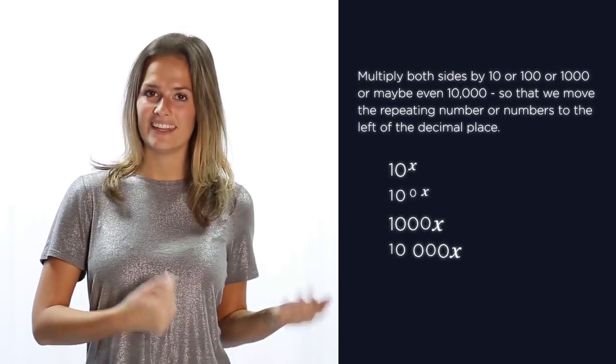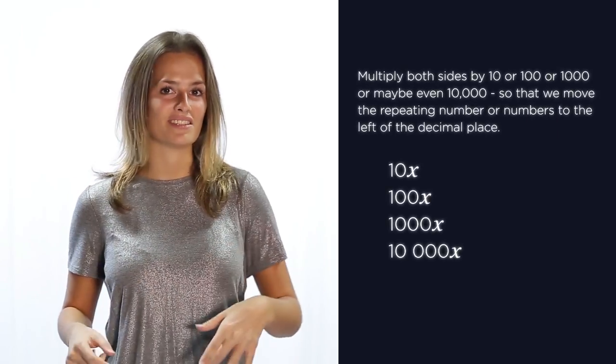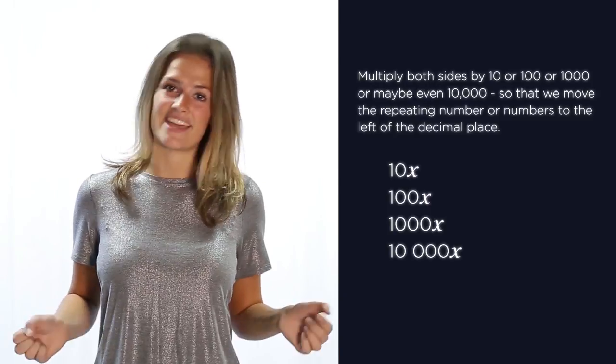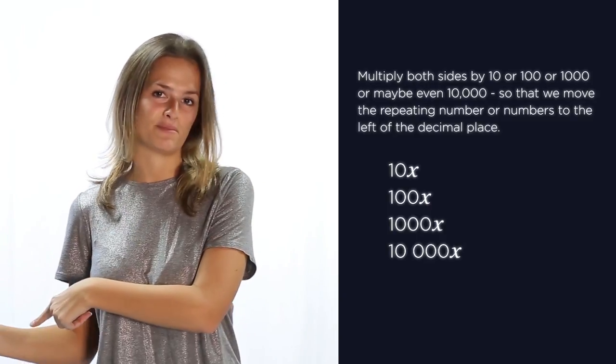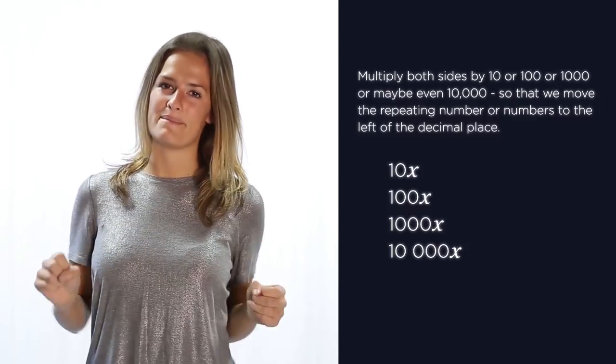So let's look at a different example. Remember how earlier I said we may multiply by ten, a hundred, a thousand, or maybe even ten thousand, to move the repeating numbers to the left of the decimal place? We're going to see what I mean by that.